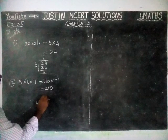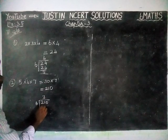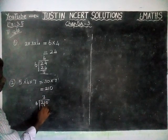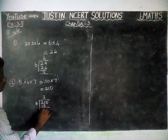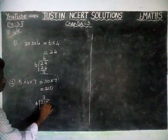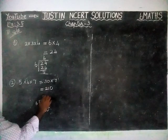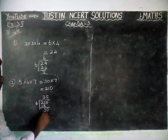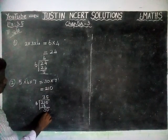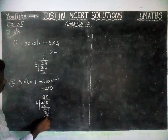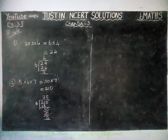In 21, 3 sixes are 18, remaining 3. So we bring down the 0. Now 5 sixes are 30, remainder 0.